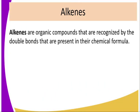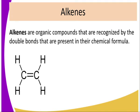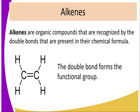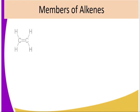Alkenes — previously we had introduced ourselves to hydrocarbons and we mentioned that the Alkenes are organic compounds that are recognized by the double bond that is present in the chemical formula, that is between carbon atoms. The first member therefore must have at least two carbons so that a double bond can exist between them. The double bond forms the functional group, and a functional group determines the properties of the compound — both physical and chemical properties.